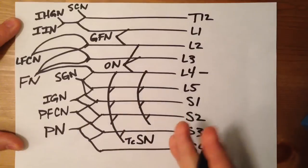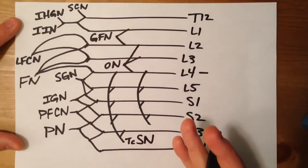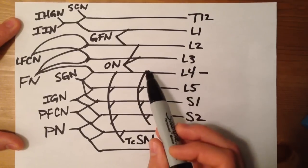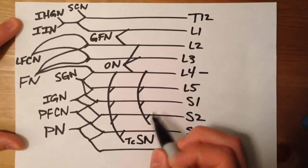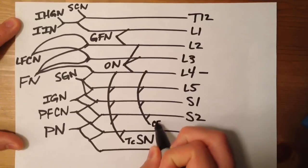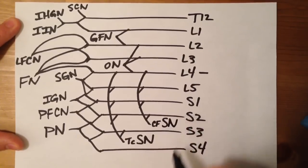And I just like to write all the initials for these, so that's why I'm writing them out like this. Between L4 and S2, that's your common fibular branch of the sciatic nerve.